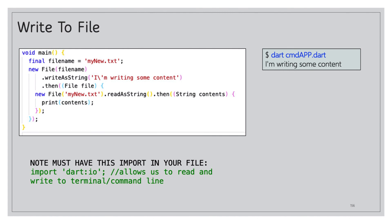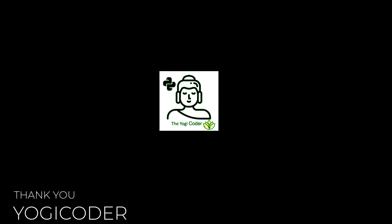To write to a file, I define a `fileName` variable set to `'my_new.txt'`, then call `new File(fileName)` and write a string to it using the `then` method. After writing, I read it back with `new File(fileName).readAsString()`, then print the contents — and exactly what I wrote appears. Thanks for making it to the end! If you found this valuable, please subscribe, give a like, leave a comment, and share it with someone who might need it.